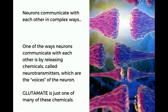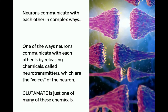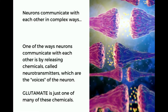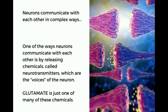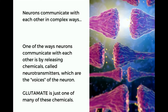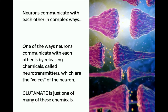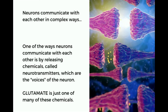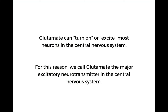Neurons communicate with each other in complex ways. One of the ways neurons communicate with each other is by releasing chemicals called neurotransmitters, which are the voices of the neuron. Glutamate is just one of many of these chemicals. Glutamate can turn on or excite most neurons in the central nervous system. For this reason, we call glutamate the major excitatory neurotransmitter in the central nervous system.